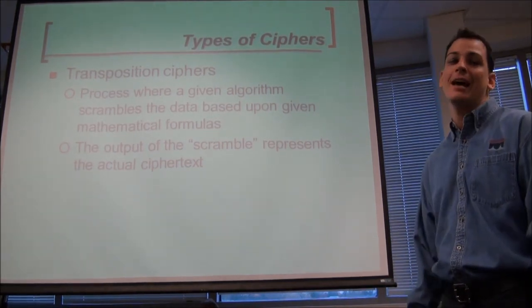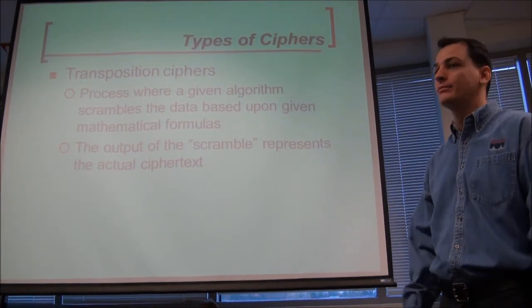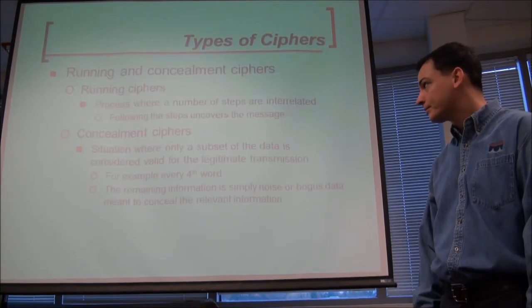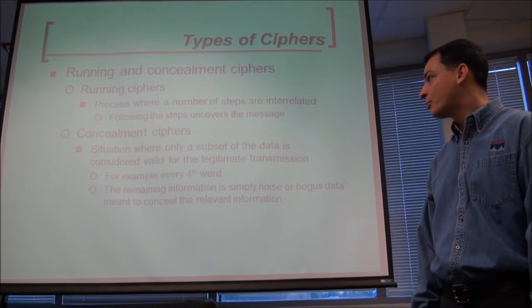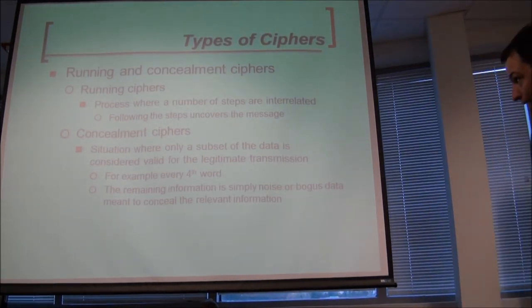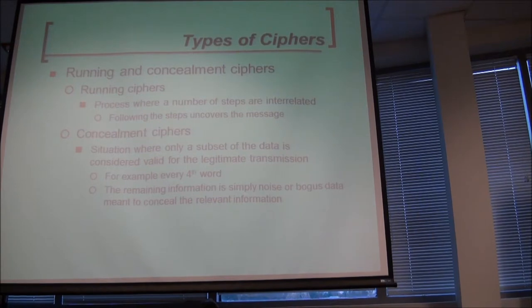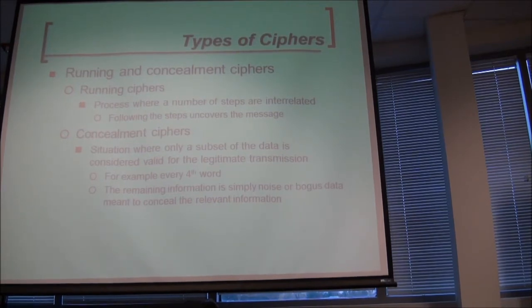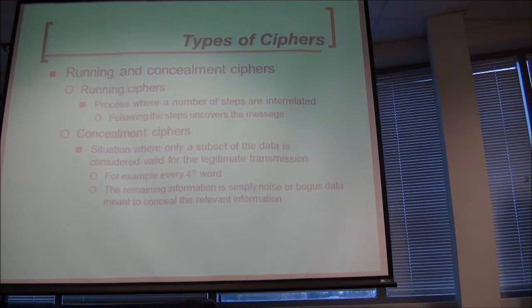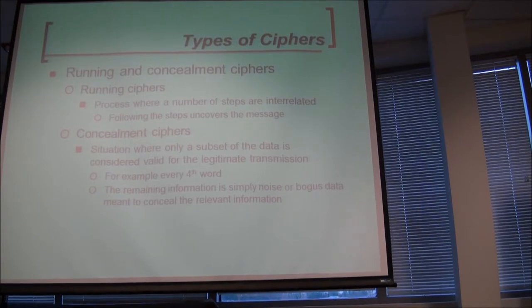Transposition is where you can't take one out and replace it, but you can scramble it. Running ciphers involve interrelated steps where following them uncovers the message. Concealment ciphers hide content where only a subset of data is valid. Wikipedia does a really good job explaining these ciphers — there's no shortage of information on each cipher type.